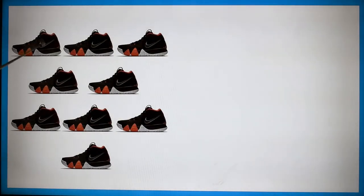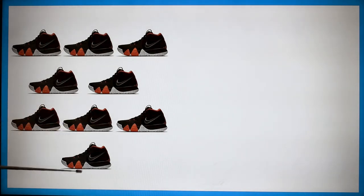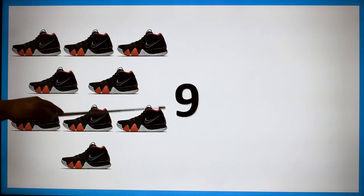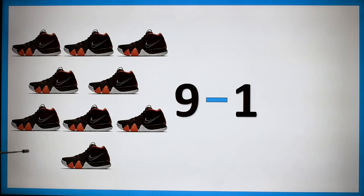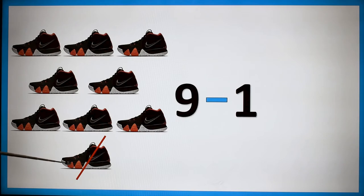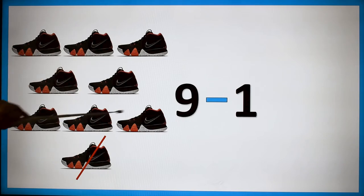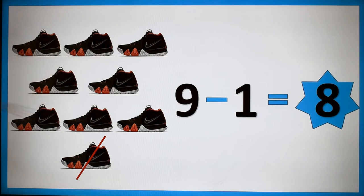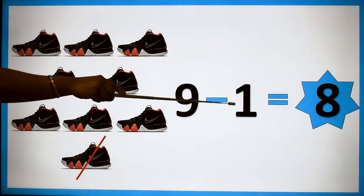How many shoes are there here? 1, 2, 3, 4, 5, 6, 7, 8, 9 — nine shoes. Nine minus one. Now I am going to cancel one shoe from this. How many shoes are left over? 1, 2, 3, 4, 5, 6, 7, 8 — eight. Answer is nine minus one is equal to eight.